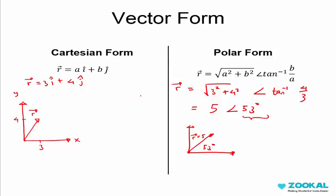You can get this Cartesian form by multiplying the magnitude with the unit factor of cosine theta. This is theta, which is 53 degrees, times i plus sine 53 degrees times j. Finally, you will get 3i plus 4j.